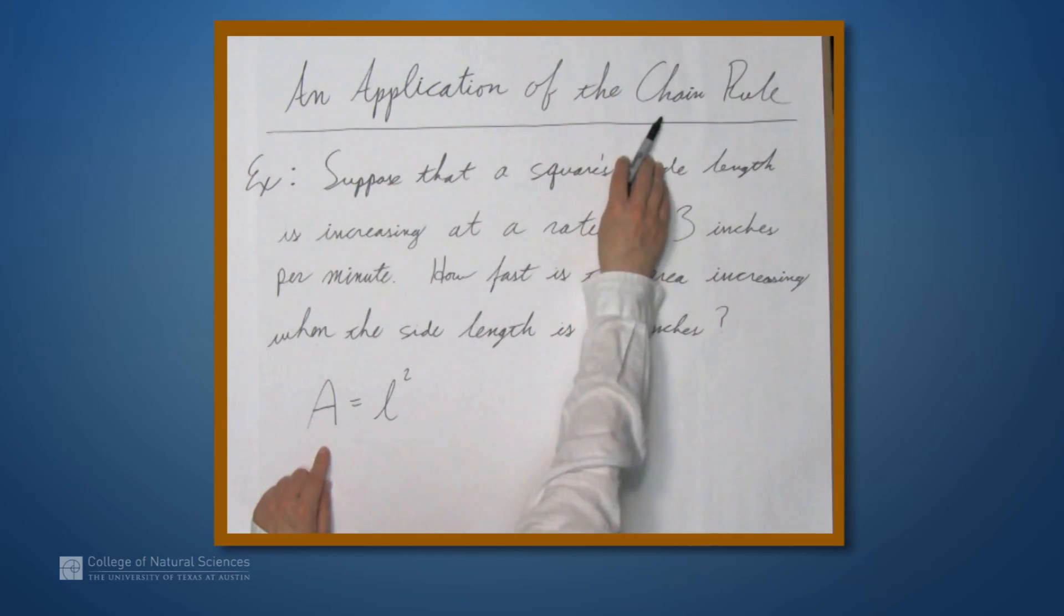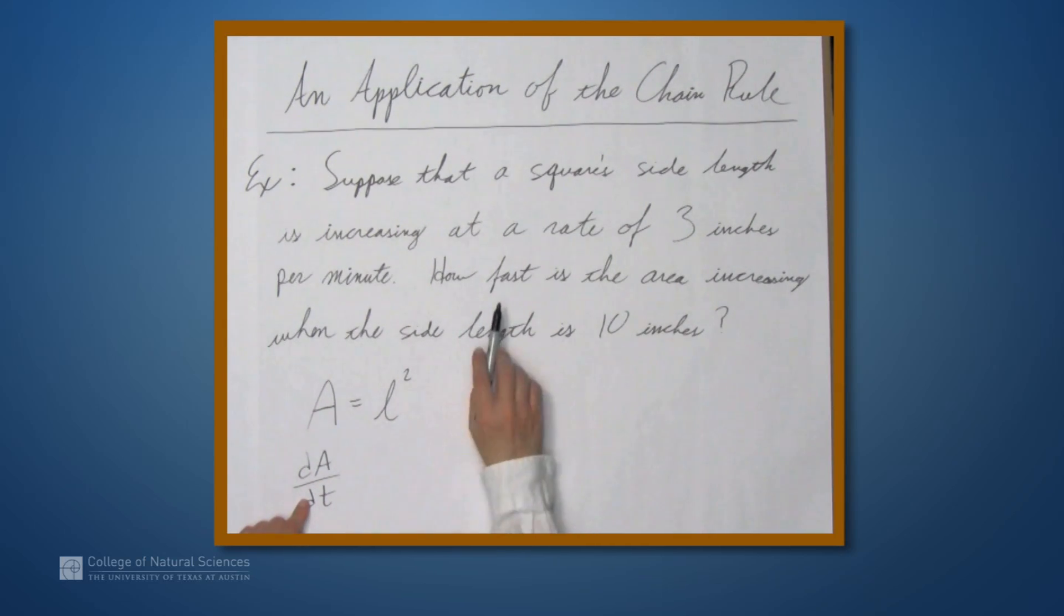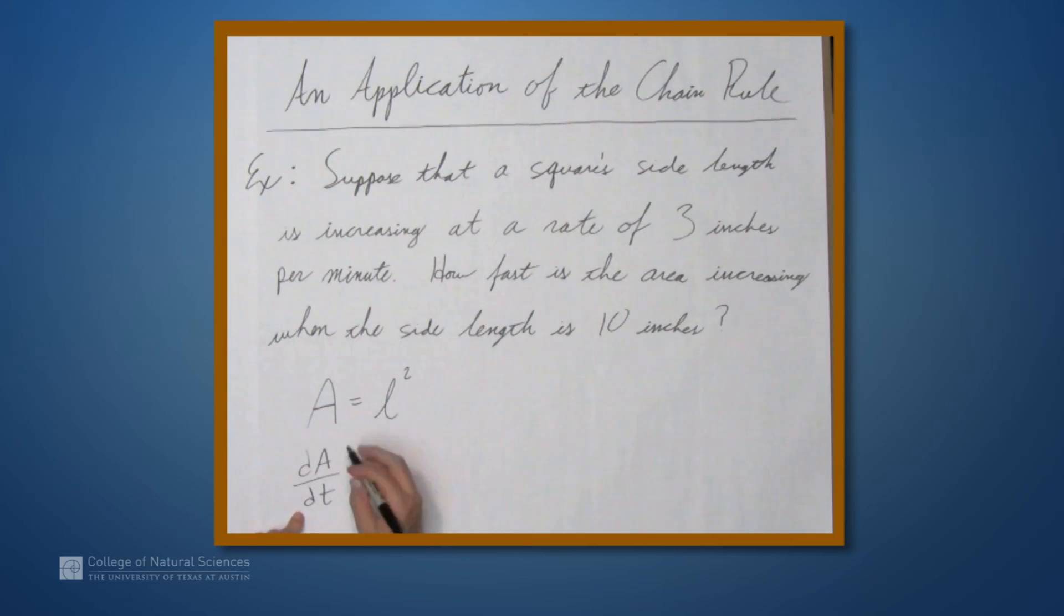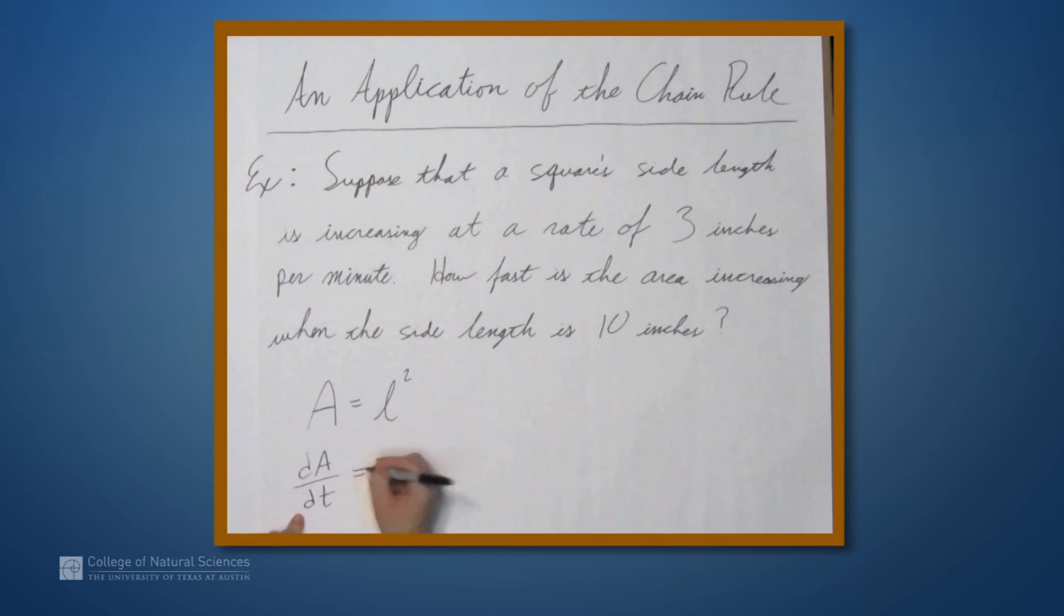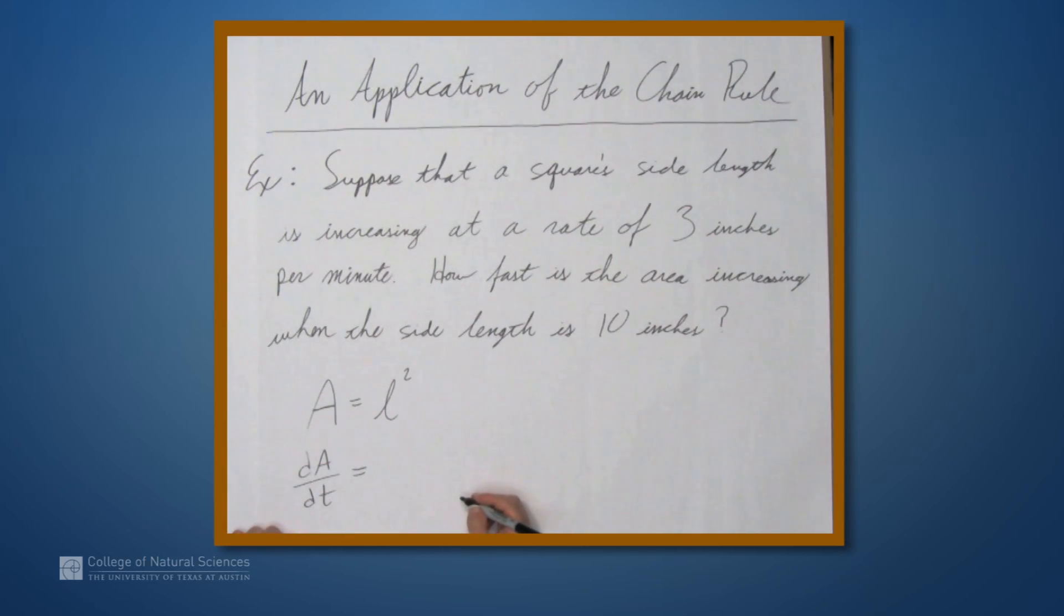We can. We just need the chain rule. So, let's take the derivative of the left-hand side. Well, that part is easy. That's just dA/dt. And this is what we want to find, right? This is how fast the area is increasing with respect to t, time. And this is the derivative of the right-hand side.